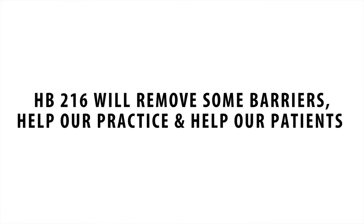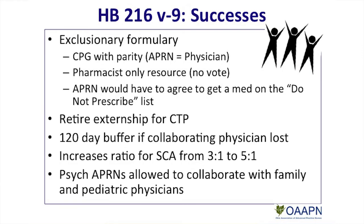Version 9 essentially removed all CRNA language. It has an exclusionary formulary and a CPG. All APRNs, including the psych nurses, retained the SCA. And it removed the ability to sign death certificates. However, House Bill 216 still has some good things in it that will remove some barriers, help our practice, and essentially help our patients. Some of the successes of Version 9: first, there will be an exclusionary formulary versus the 45-page inclusionary formulary that we used to have.